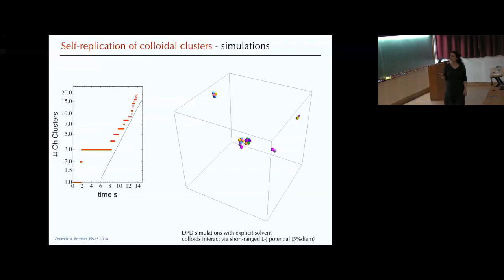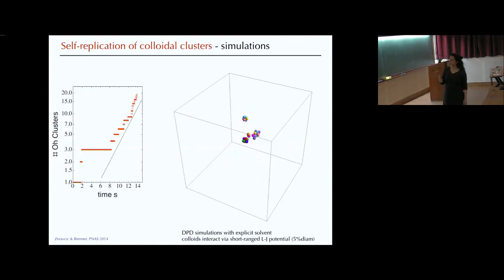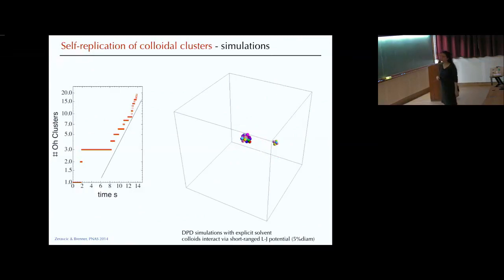I sped up the simulation. You can see two types of clusters — two colors. One is red, green, blue and the other is pink, yellow, light blue. There are also lots of dimer structures, which are the second parent. The summary of these simulations is shown here — a log-linear plot of the number of clusters as a function of time. We didn't distinguish colors, just the number of clusters as a function of time, and we sort of have this exponential kind of growth.